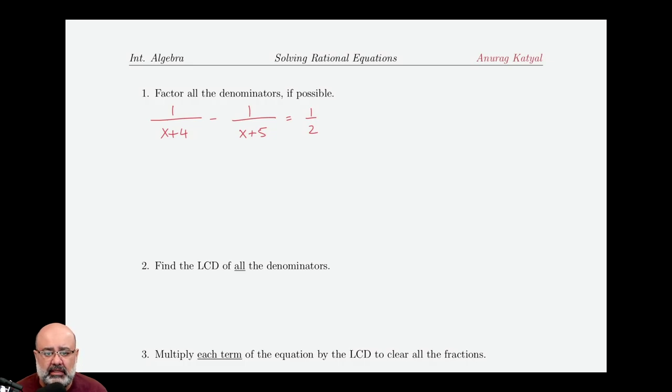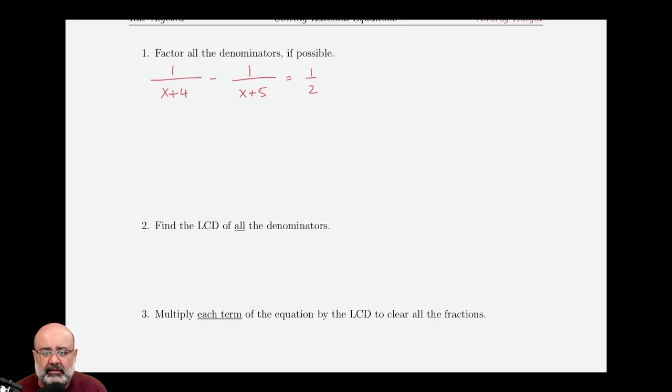So the first step is, as always, to factor out all the denominators, which we can't do, so we move on to finding the LCD. For the LCD, we write down all the denominators: x plus 4, x plus 5, and 2.